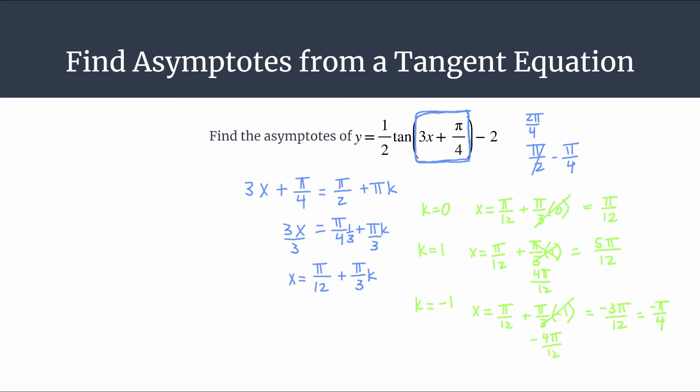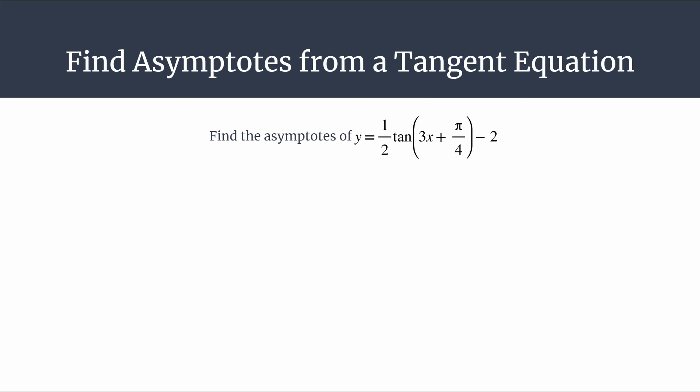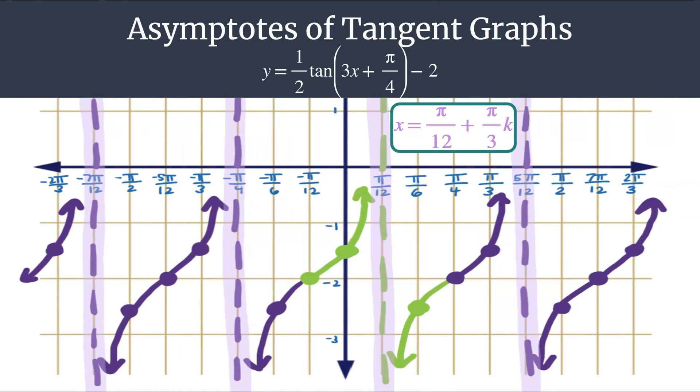Now let's look at a sketch of this graph. We can see some of those asymptotes we talked about. We have our asymptote generating equation. We substituted in to find the asymptote at pi over 12, that was when k equals 0. At 5 pi over 12, that was when k equaled 1. At negative pi over 4, or negative 3 pi over 12, that was when k equaled negative 1. If you substitute in negative 2 for k, you'd get the vertical asymptote at negative 7 pi over 12.